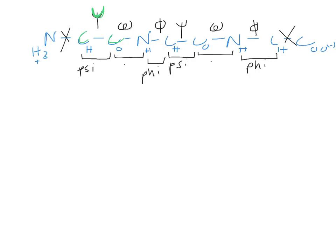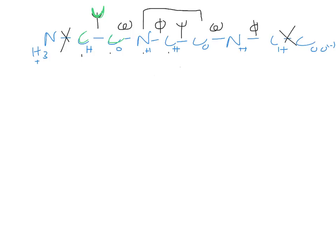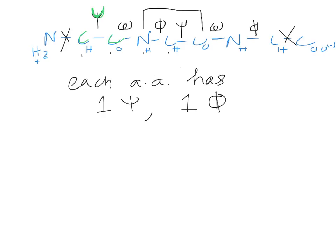I'm going to erase some of this so it doesn't get overly cluttered. With this tripeptide, we only have one residue that has all of the parts — this NCC right here. The other two, because they're connected to the termini, don't have a phi, psi, and omega. Each amino acid in a protein has one phi and one psi, except for the ones connected to the N-terminus and C-terminus. If we know those values, we can plot them in a Ramachandran plot.